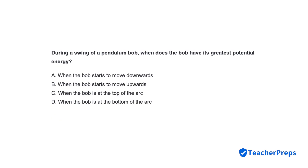During a swing of a pendulum bob, when does the bob have its greatest potential energy? Correct response: Letter C — when the bob is at the top of the arc.